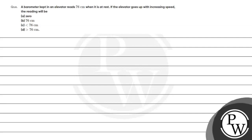Hello Bacho, let's read the question. A barometer kept in an elevator reads 76 cm when it is at rest. If the elevator goes up with increasing speed, the reading will be — here we have 4 options: A) 0, B) 76 cm, C) less than 76 cm, and D) greater than 76 cm.